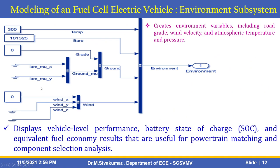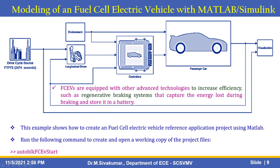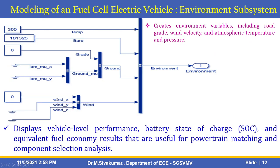The Environmental Subsystem creates environmental variables including road grade, wind velocity, and atmospheric temperature and pressure. These are applied to both the environmental subsystem and the controller block. The visualization subsystem displays vehicle-level performance, battery state of charge, and equivalent fuel economy results that are useful for powertrain matching and component selection analysis.